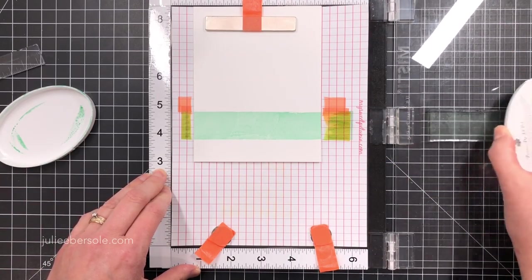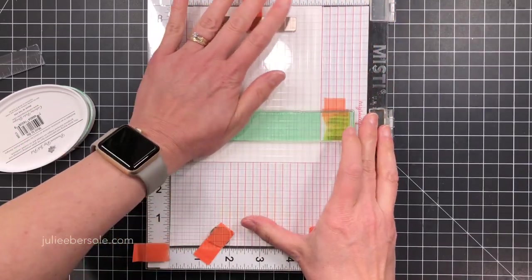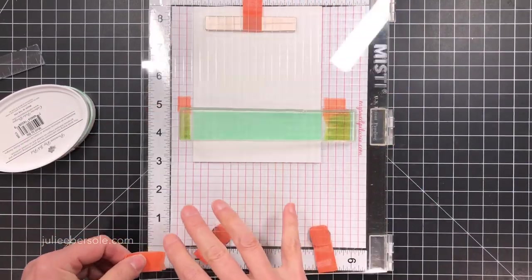So I'm going to re-ink. I'm not going to move anything. I'm not moving the card. I'm not moving the stamp. I'm just going to re-ink and re-stamp right over the top of that.